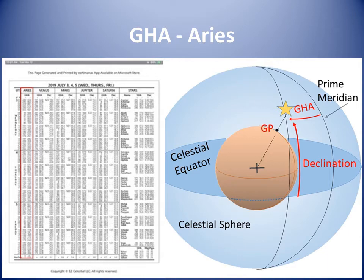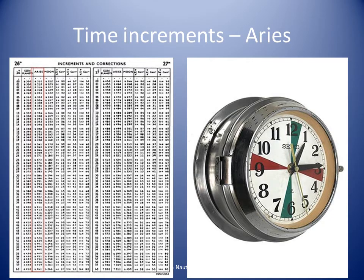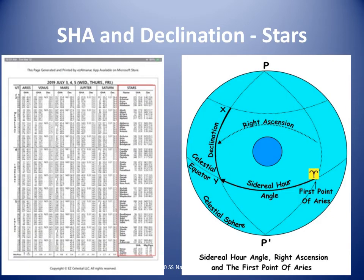This slide shows the GHA column for Aries. The sidereal hour angle (SHA) of a star is the angle between the star and the first point of Aries, measured westward from Aries. We have to first find the location, or GHA, of Aries, then apply the SHA of the star to find the GHA of the star. This slide highlights the part of the Nautical Almanac with the SHA and declinations of stars.